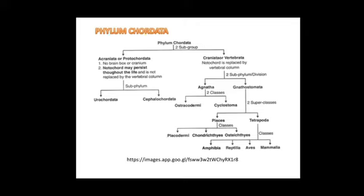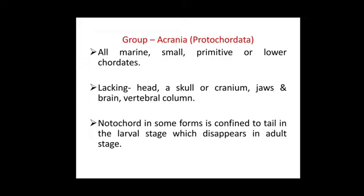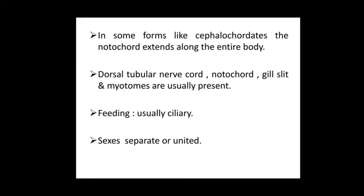Hemichordata is also included in the syllabus. In group Acraniata, also known as Protochordata, all animals are marine, small, and primitive lower chordates. These organisms lack a head, skull, cranium, jaws, brain, and vertebral column. The notochord in some forms is confined to the tail in the larval stage and disappears in the adult stage.